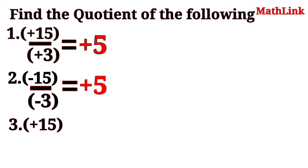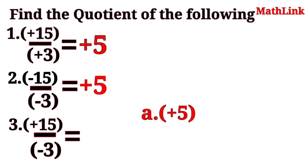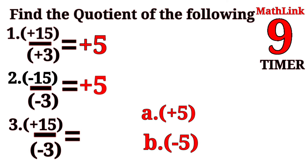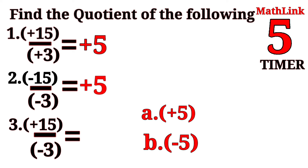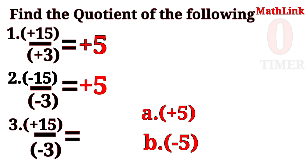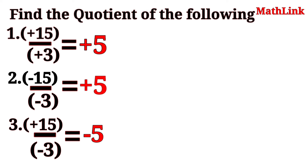Number 3: Positive 15 divided by negative 3 is equal to? Letter A: Positive 5. Letter B: Negative 5. The correct answer is letter B, negative 5 — negative sign because the two integers have different signs.